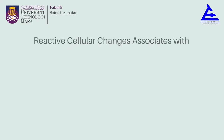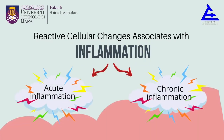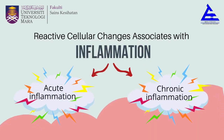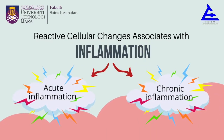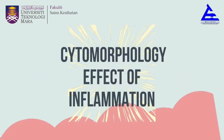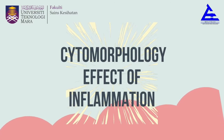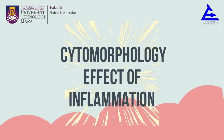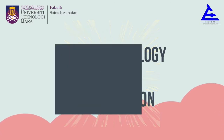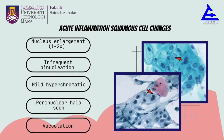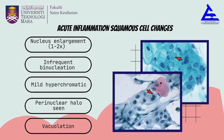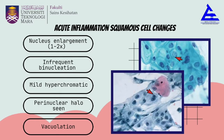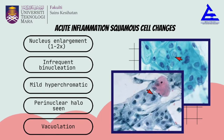To begin with, reactive cellular changes associated with inflammation includes two types: acute inflammation and chronic inflammation, affecting squamous cells. The characteristics for acute inflammation squamous cell changes are nucleus enlargement of one to two times.